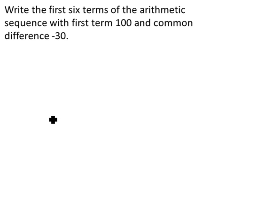By definition, for an arithmetic sequence, to get from one term to the next, you would add the common difference. And so it's telling us the first term is 100, so that's A1, or the first term.